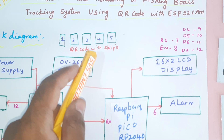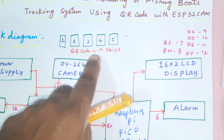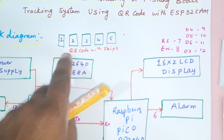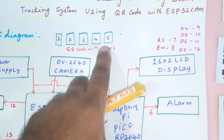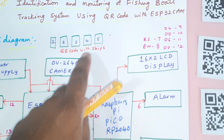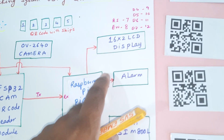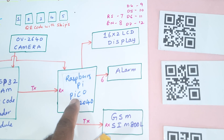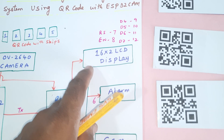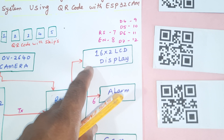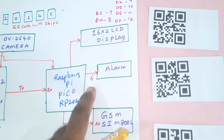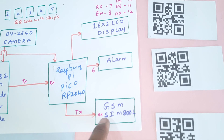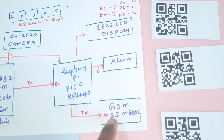We are using four authorized cards and one unauthorized card. We are also using a 16x2 LCD character display — whatever process is going on will be displayed on the LCD — and one alarm GSM SIM 800L.